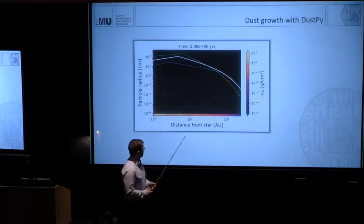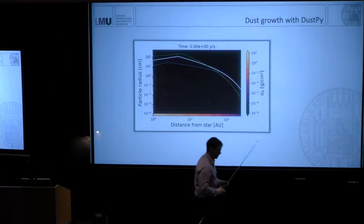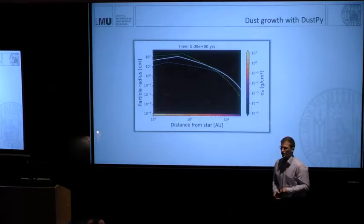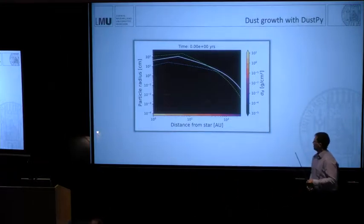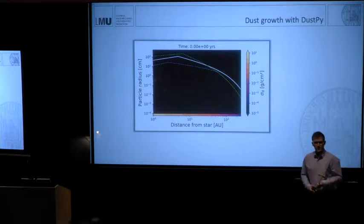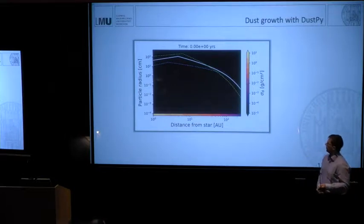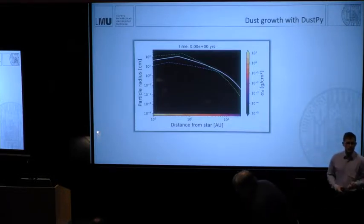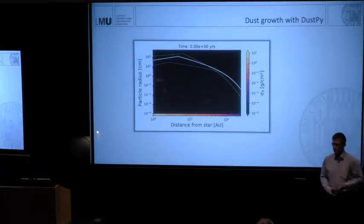The output of DustPy is basically what you see here. You've already seen this kind of video several times in this workshop. On the x-axis, you have the distance from the star. On the y-axis, you have the particle size. In the color-coded is just a density distribution of a certain particle size at a certain radius.